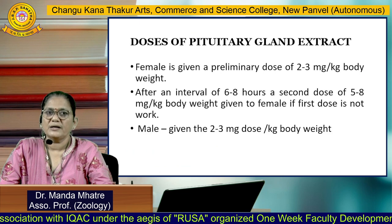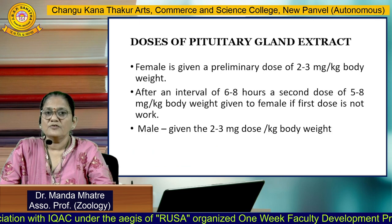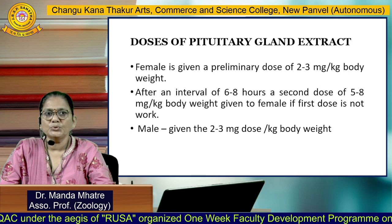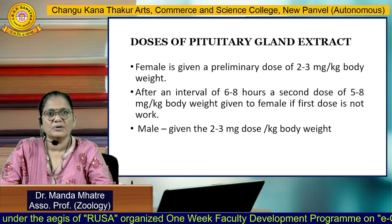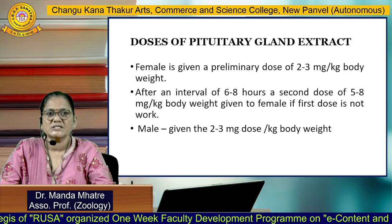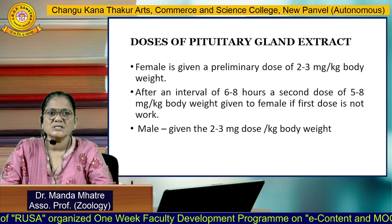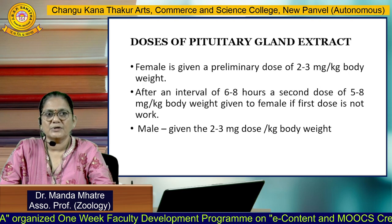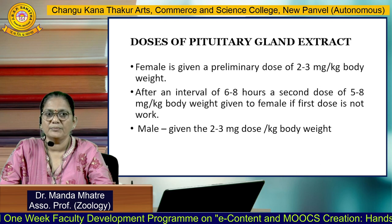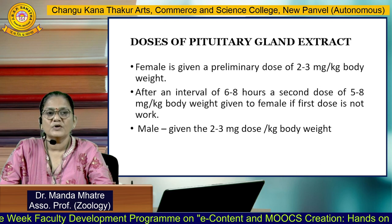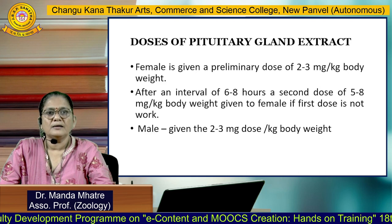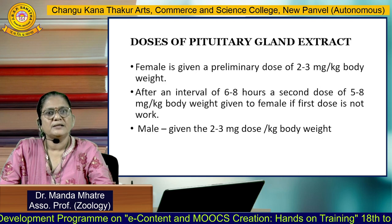Dosage of pituitary gland extract: the female is given a preliminary dose of 2 to 3 mg per kg of body weight. After an interval of 6 to 8 hours, a second dose of 5 to 8 mg per kg body weight is given to the female. If the first dose is not working, the male receives 2 to 3 mg per kg of body weight.